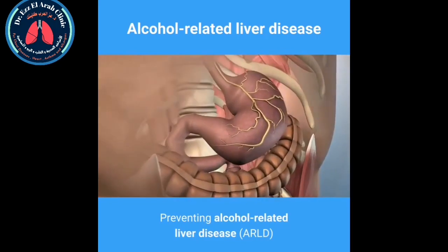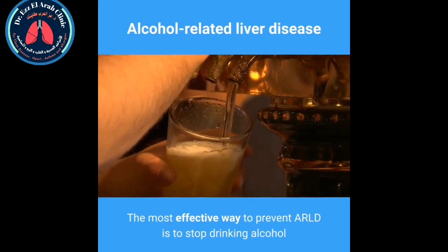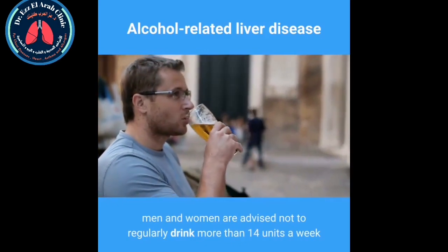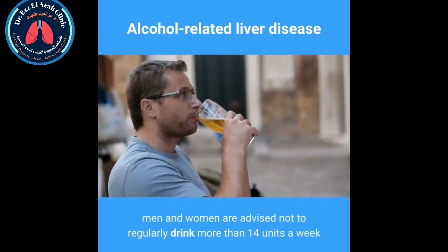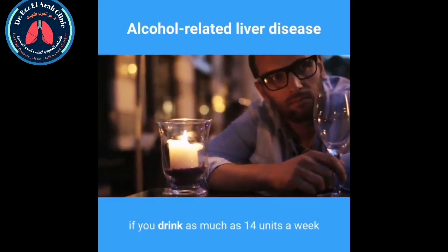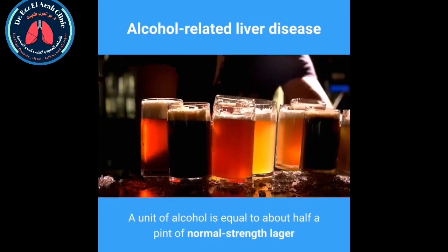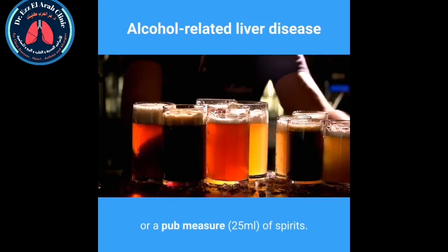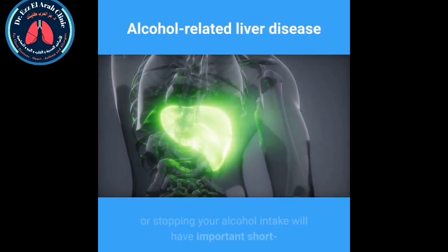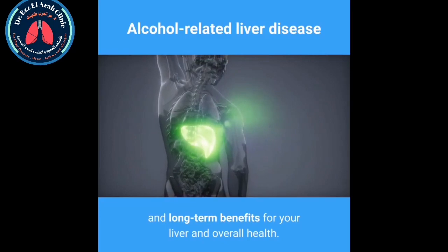The most effective way to prevent ARLD is to stop drinking alcohol or stick to the recommended limits. Men and women are advised not to regularly drink more than 14 units a week, spread over three or more days. One unit of alcohol is equal to about half a pint of normal-strength lager or a 25ml pub measure of spirits. Even if you have been a heavy drinker for many years, reducing or stopping your alcohol intake will have important short and long-term benefits for your liver and overall health.